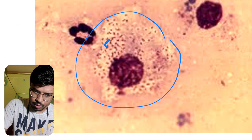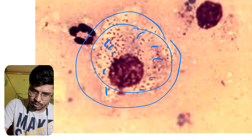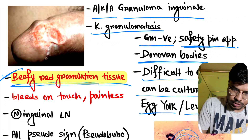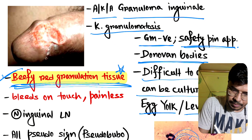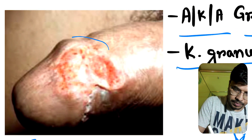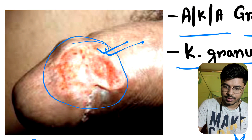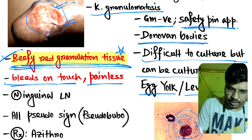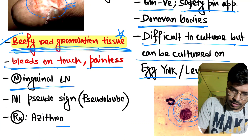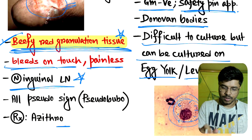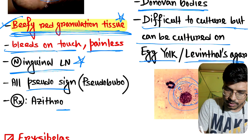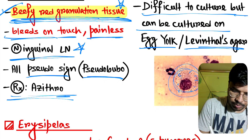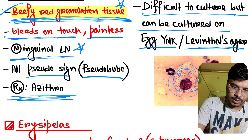These are Donovan bodies — safety-pin-shaped bacteria. Clinical features: there is beefy-red granulation tissue — this is the beefy-red granulation tissue. It bleeds on touch. Pellets are present. The inguinal lymph node is normal — this is also important — and pseudo-bubo can be seen in donovanosis. Treatment is azithromycin.